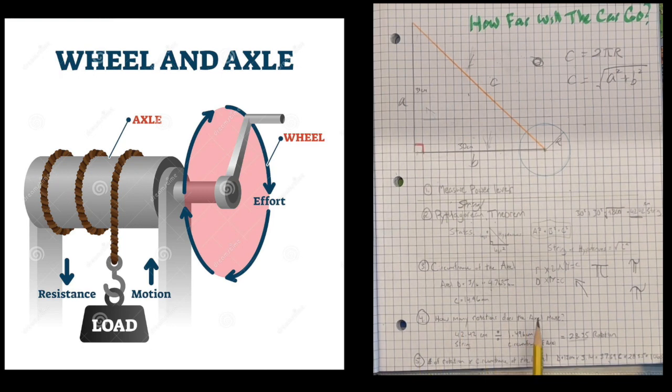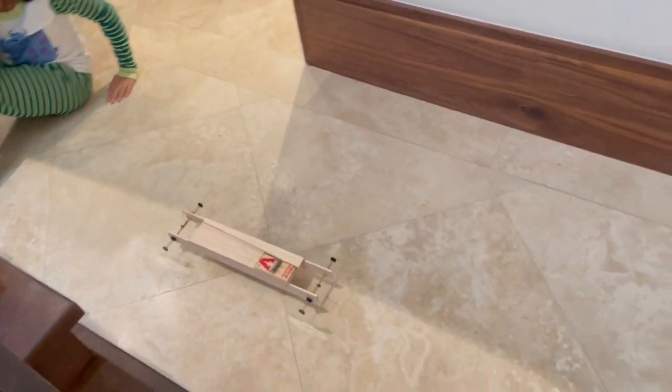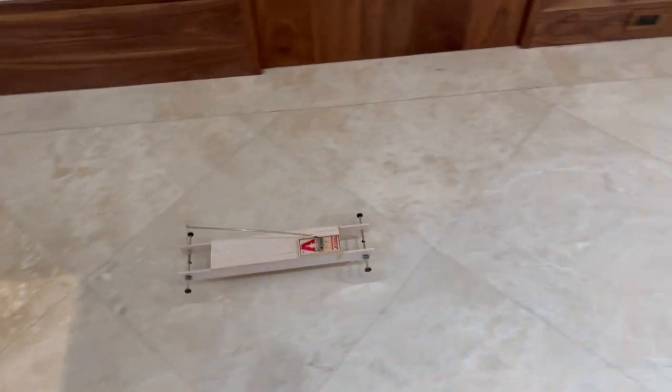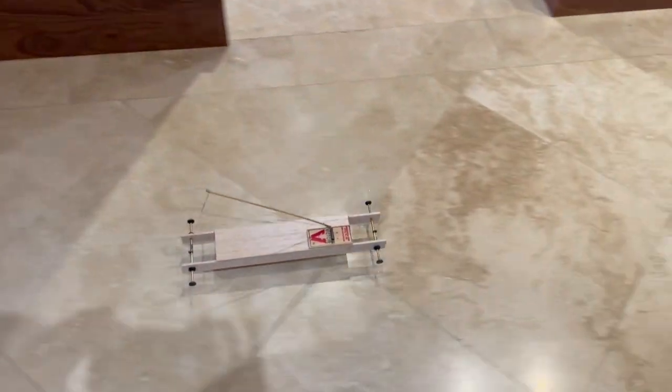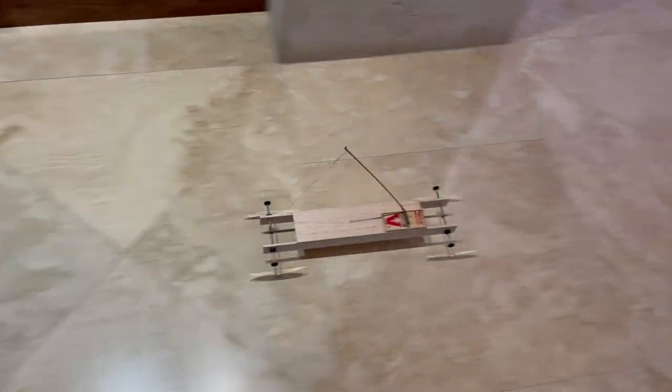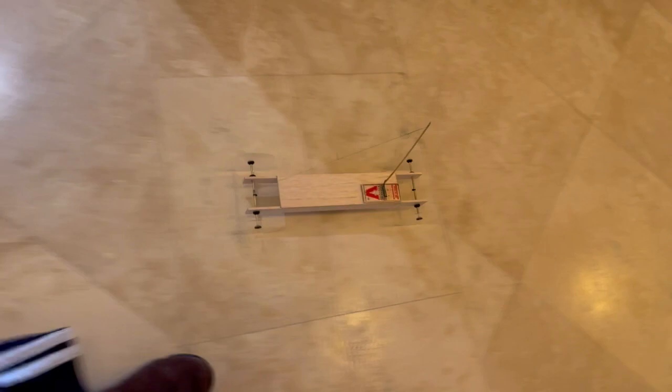How many rotations does the axle make? The string is 42.42 centimeters. Our axle's circumference is 1.496 centimeters. We divide the length of the string by the circumference of the axle and we get 28.35 rotations.